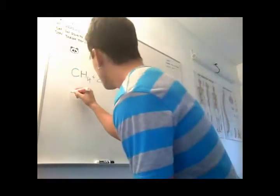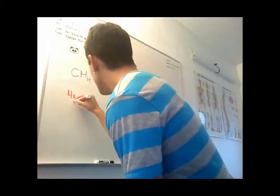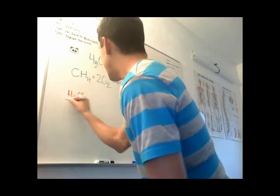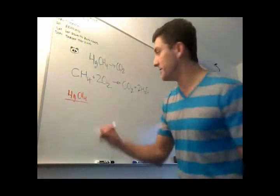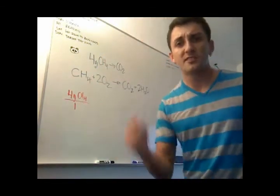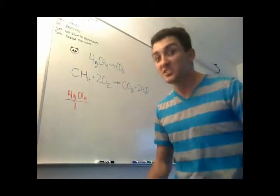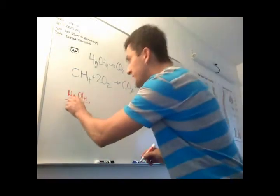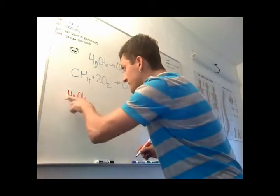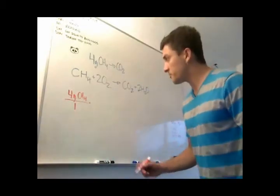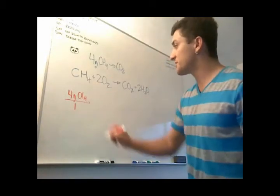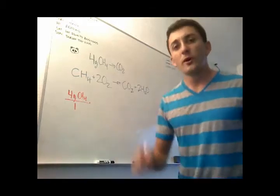So what do we start with? We start with 4 grams of CH4, so I will write this down: 4 grams CH4. Now we're gonna put it over one. Why is that? Because 4 grams of CH4 divided by one is four grams of CH4.